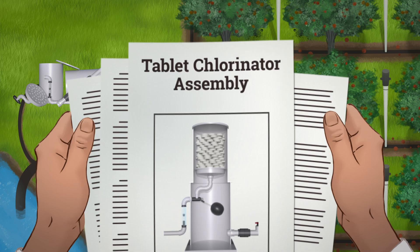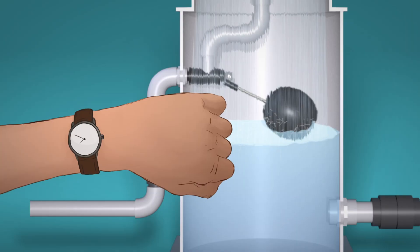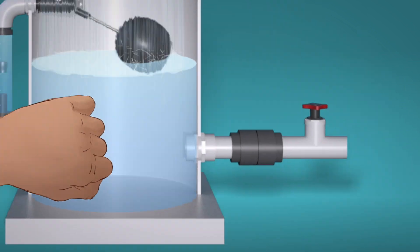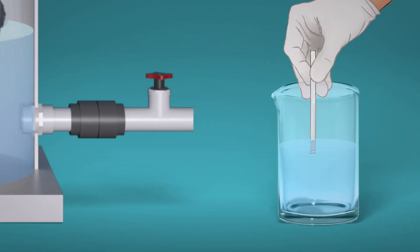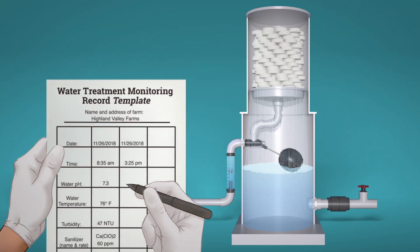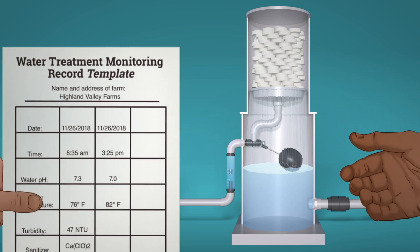You will implement the plan you've developed and verify that your equipment is working properly. Finally, you will monitor outputs by testing the water to ensure your system is working correctly and your water is properly treated. Document your process and results so you can show regulators and others that your water treatment plant is working.